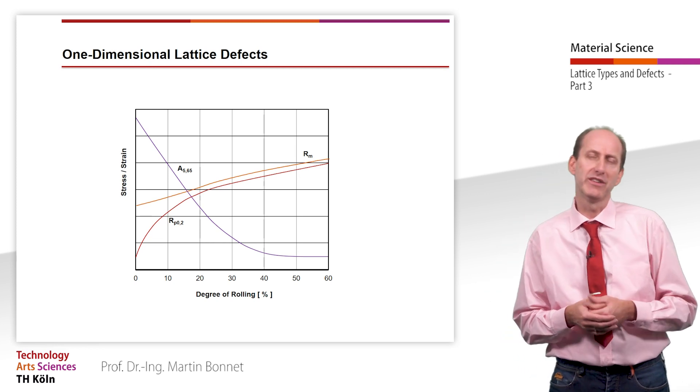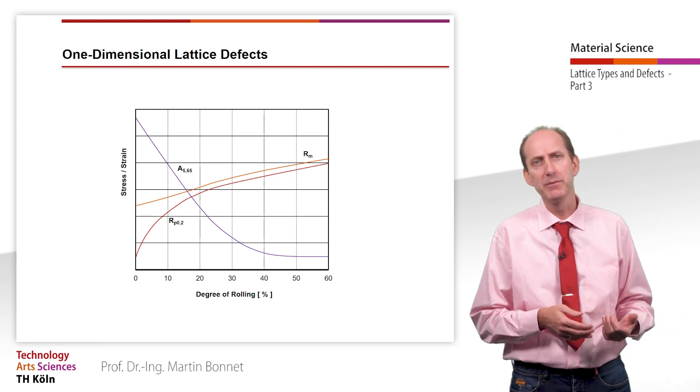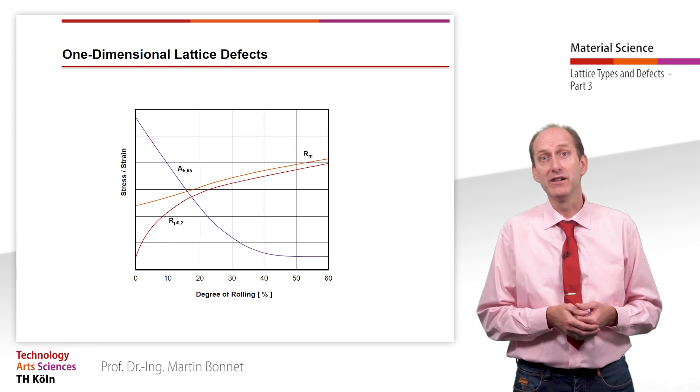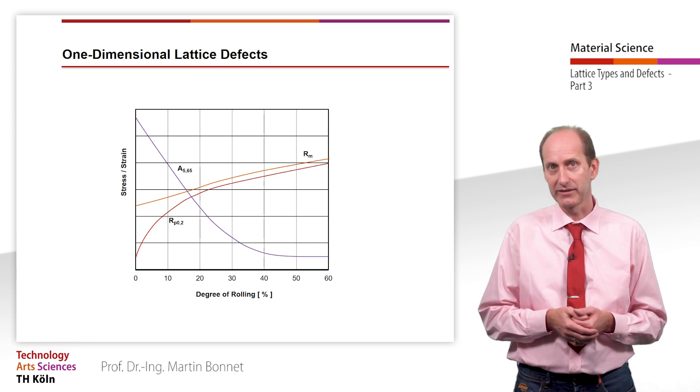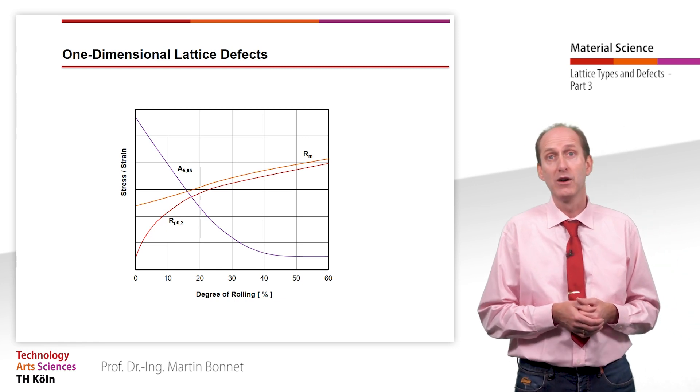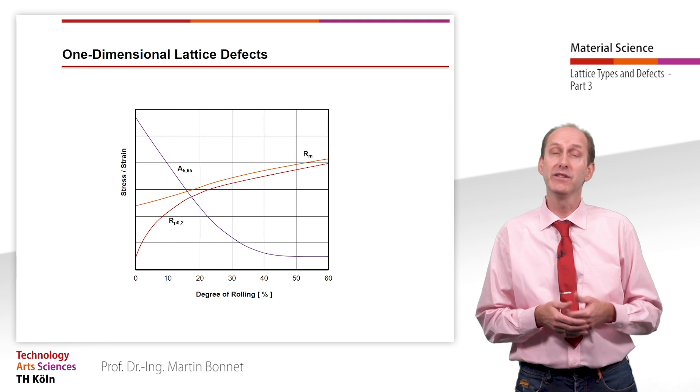All these material properties RP 0.2, RM, A5.65 and E are determined in a tensile test. We will be talking about the most important fundamentals of the tensile test in the next video.